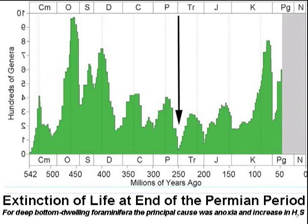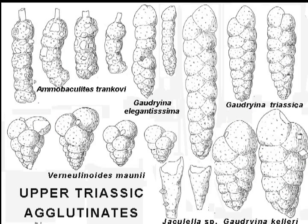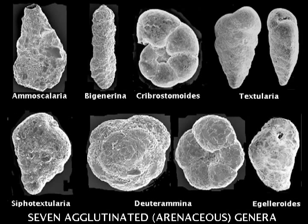At the end of Permian times, the mass extinction of all living forms included the foraminifera — about half of the then-existing genera perished. Recovery was slow, but a large number of tectinous and calcareous agglutinates are found in stratified Middle Triassic. Later in that period they became more numerous and continued their expansion and evolution during the Jurassic.